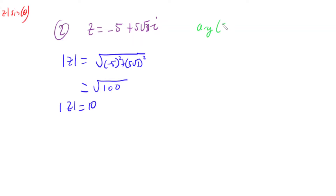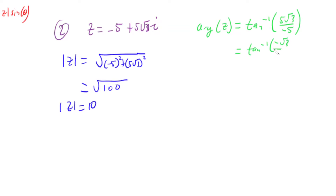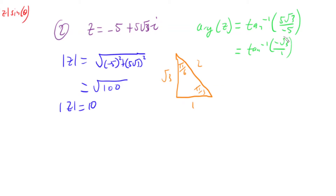Getting the argument of our complex number, that's going to be inverse tan of our imaginary 5 root 3 over our real negative 5. Simplifying, we get inverse tan of negative root 3 over 1. This should be an exact value, so drawing a pi-on-6, pi-on-3, 1, 2, root 3 triangle — the angle with opposite root 3 and adjacent 1 gives us pi on 3.